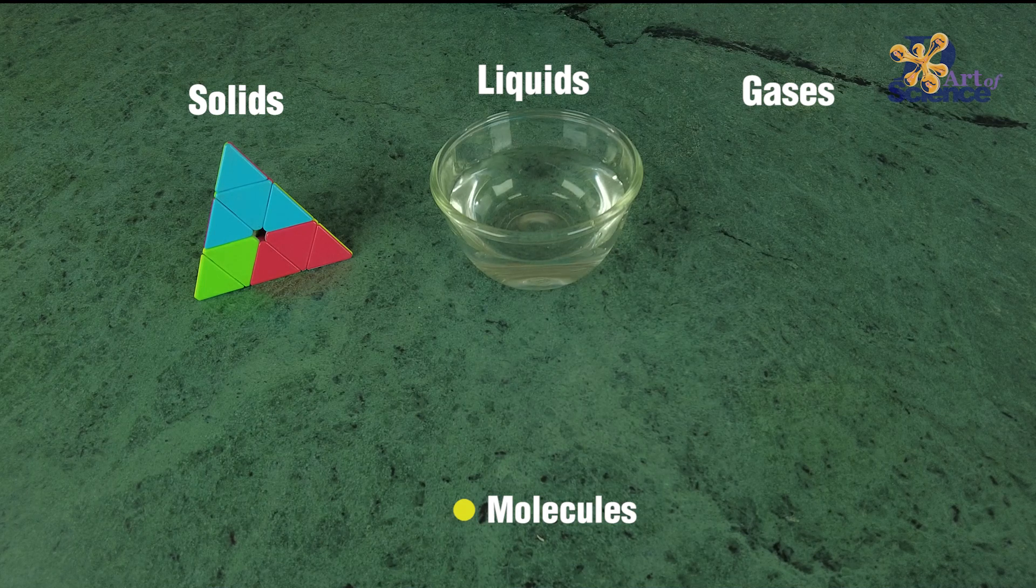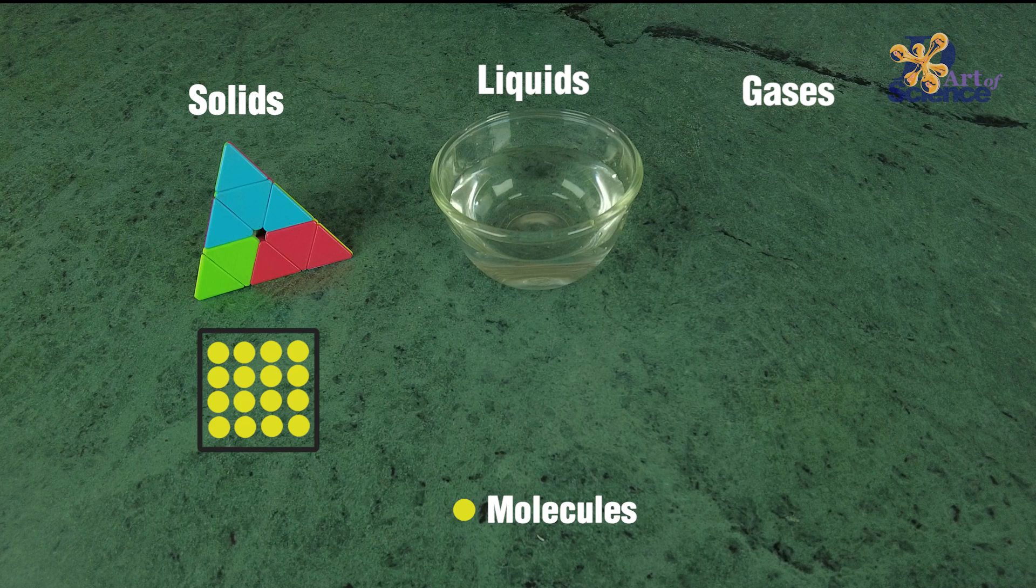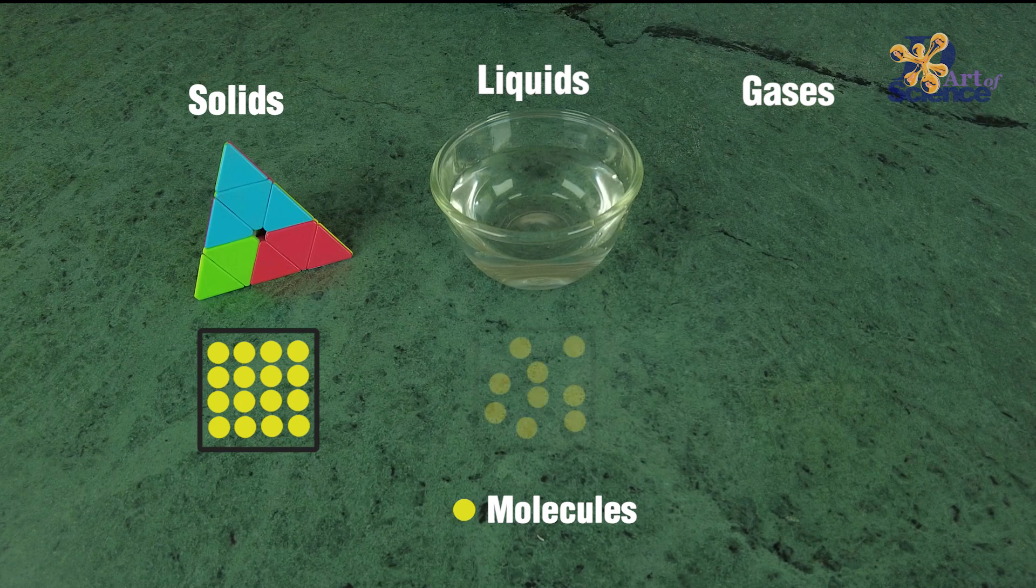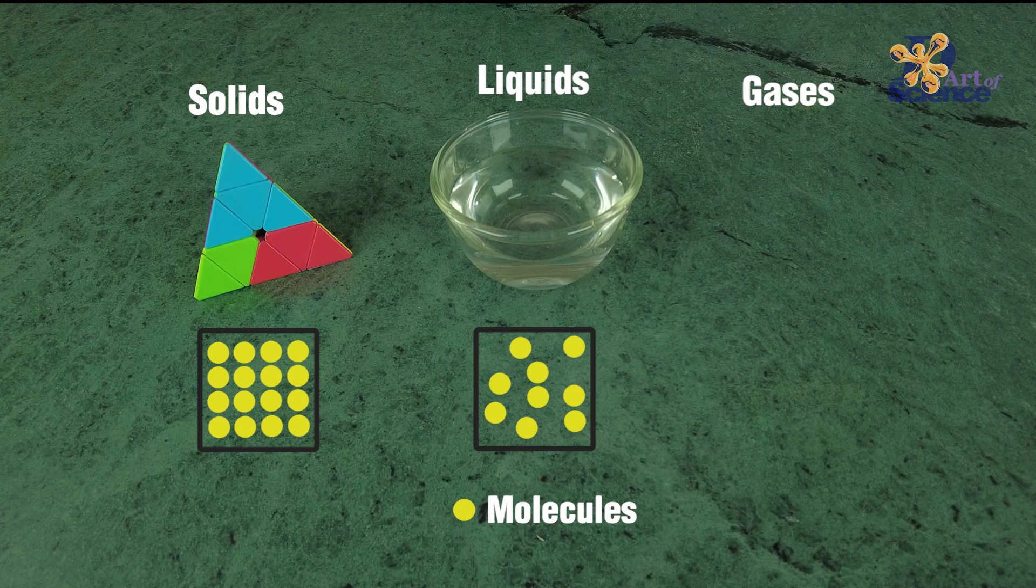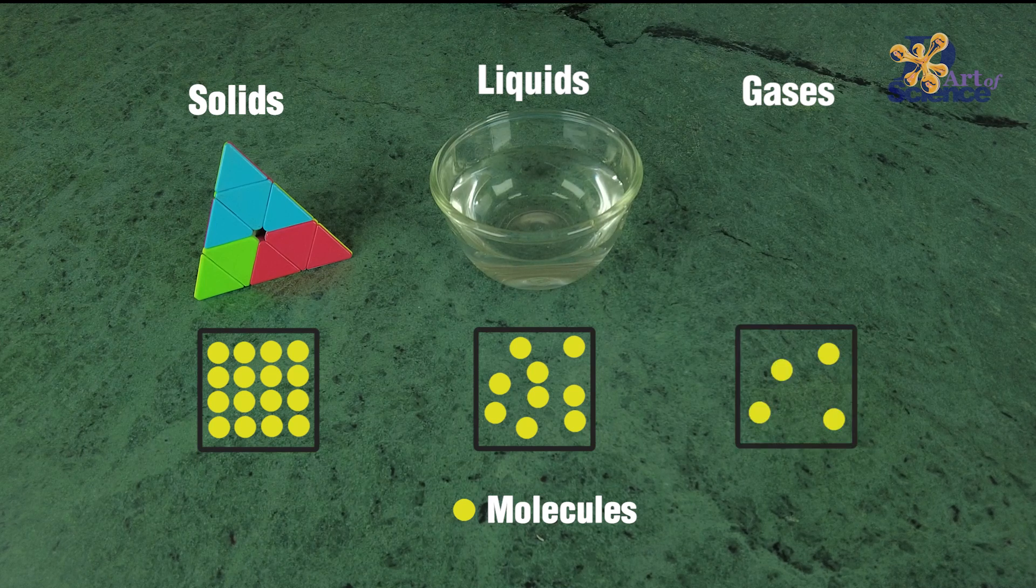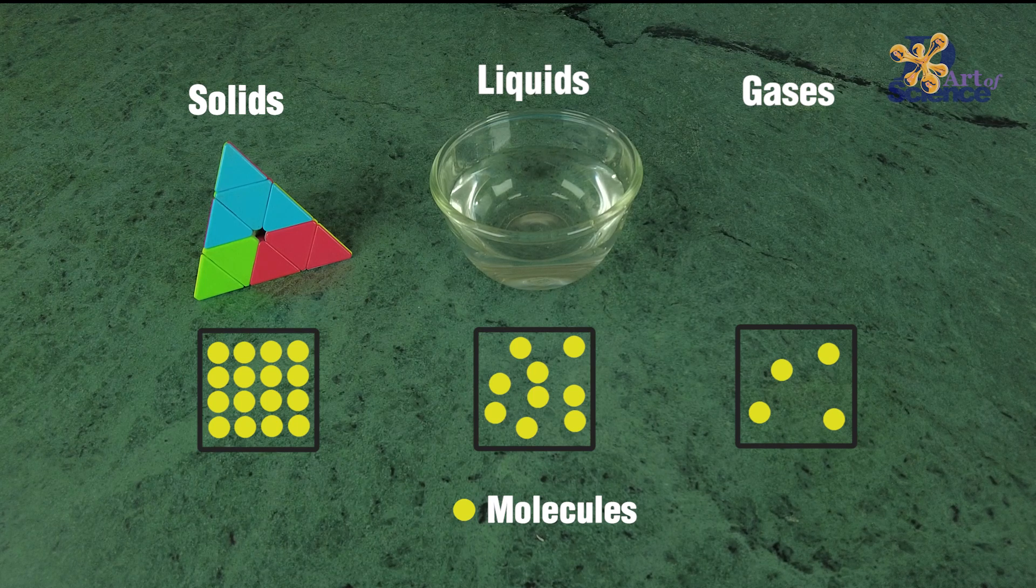In solid state, the molecules are closely packed with each other and therefore the solids are more dense and strong. In liquid state, they are relatively loosely packed which allows liquids to flow. But in case of gases, the molecules are absolutely free and have lots of spaces between them.